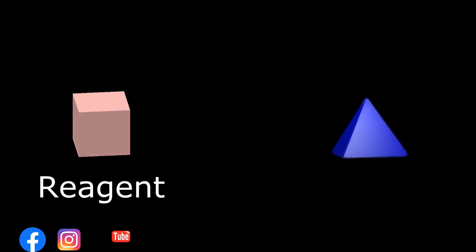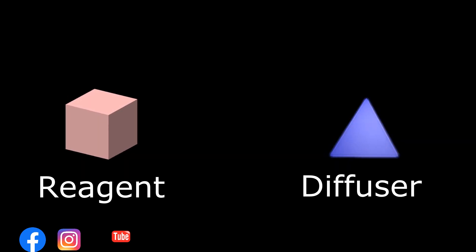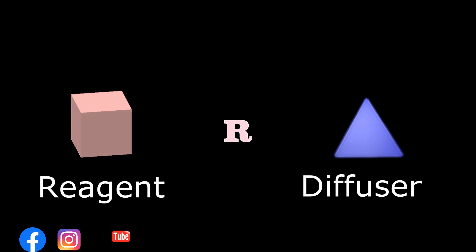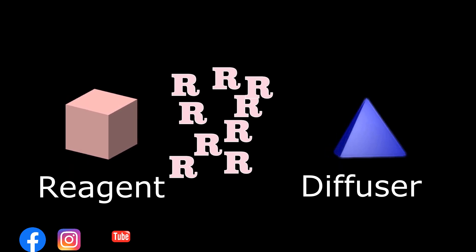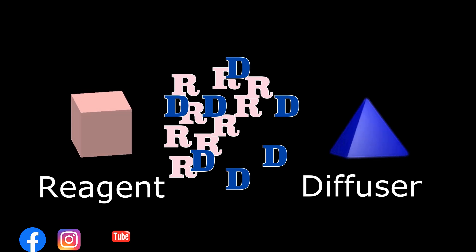In simple terms, Alan Turing's theory of morphogenesis goes something like this. Two chemicals — let's call them a reagent and a diffuser — interact to influence skin patterns. If the reagent stimulates the production of one color, the diffuser suppresses it.